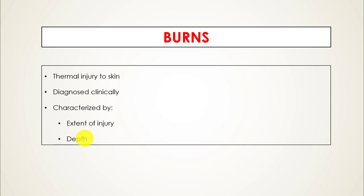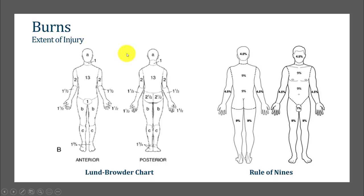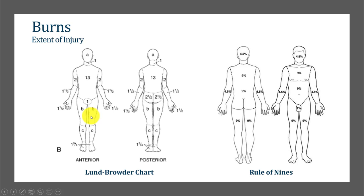For characterizing the extent of a burn injury, there are two ways this can be done. One is to use what's known as a Lund-Browder chart, shown on the left side of the screen. It gives percentages based on whether the feet, legs, hands, arms, and head are involved. This chart has an 'A' for the head and 'B' and 'C' for the legs, because the Lund-Browder chart has different values depending on whether the person injured is a baby, child, or adult. The more commonly used method, which is less precise, is the Rule of Nines.